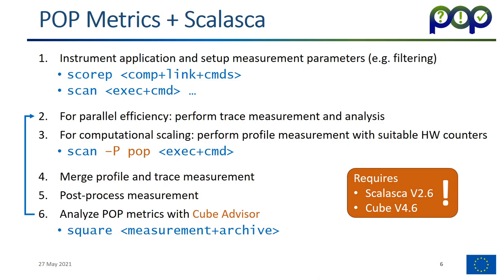In order to simplify this, we introduced so-called presets. The 'scan' command now has a new option '-P' for preset, and by giving it the value 'POP', scan knows exactly which two measurements to do, in what order, and with what hardware counters — so you don't have to remember. Once you do that, you get a profile and trace measurement. After that, we merge them together into a single file, post-process them, and analyze the result with the Cube advisor. These last three steps are simplified by using 'square' in front of a measurement archive, which recognizes it as a special POP measurement and performs the three steps automatically.